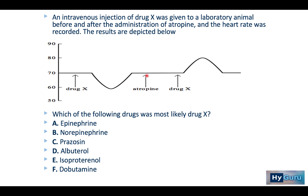In this study, atropine is given, which is an anti-muscarinic. If you give an anti-muscarinic, your heart rate should go up. We then give drug X again. Normally, drug X alone should cause bradycardia; however, it causes tachycardia in the setting of atropine.